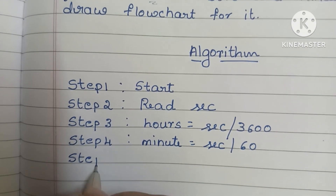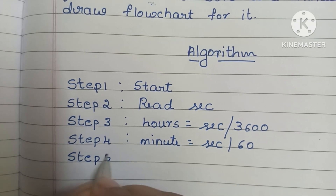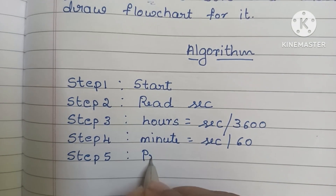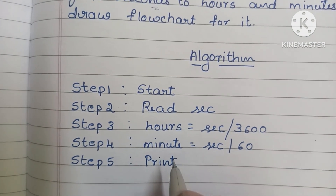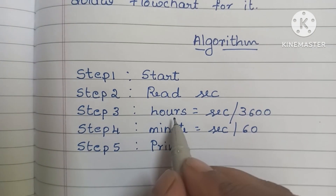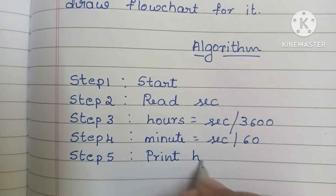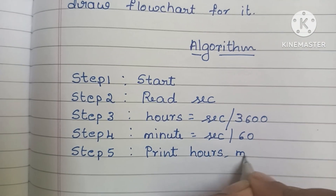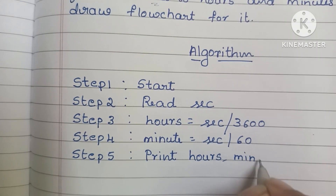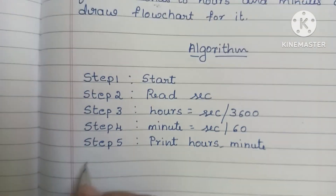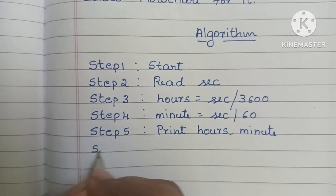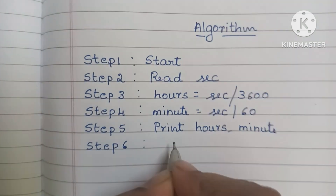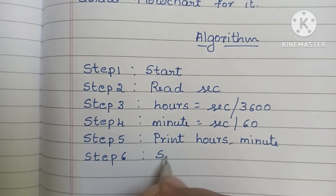In Step 5, we have to print the output values — print Hours, Minutes. In Step 6, we have to stop the algorithm using a stop statement.